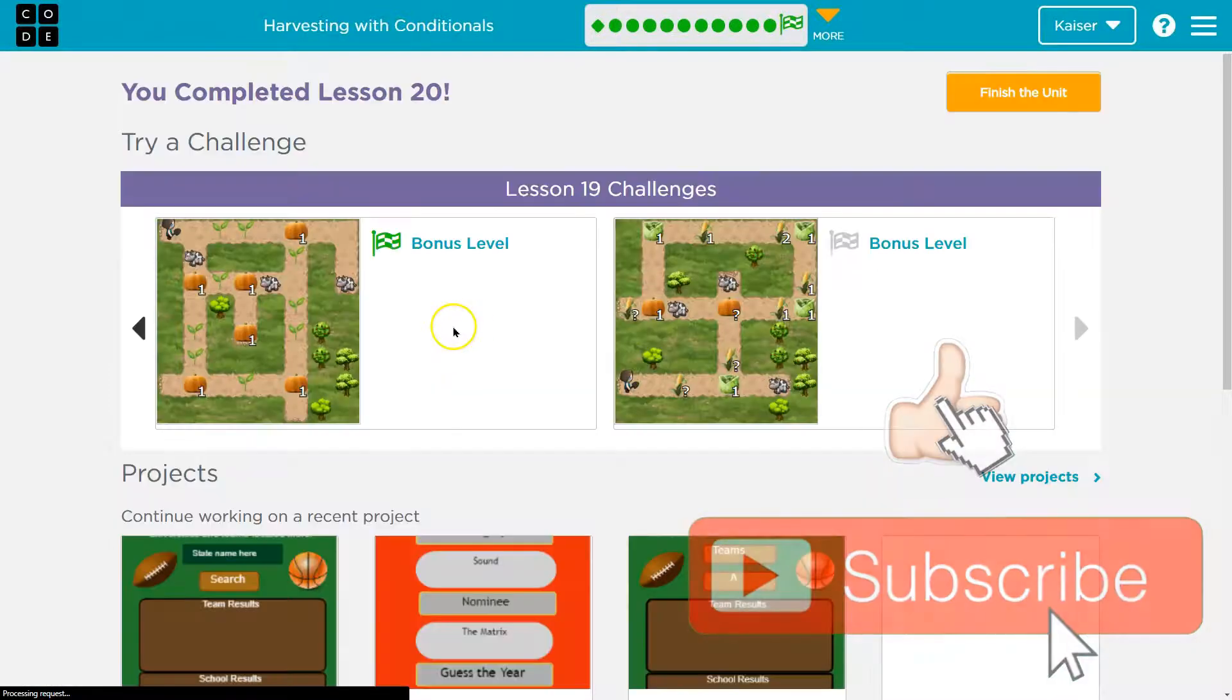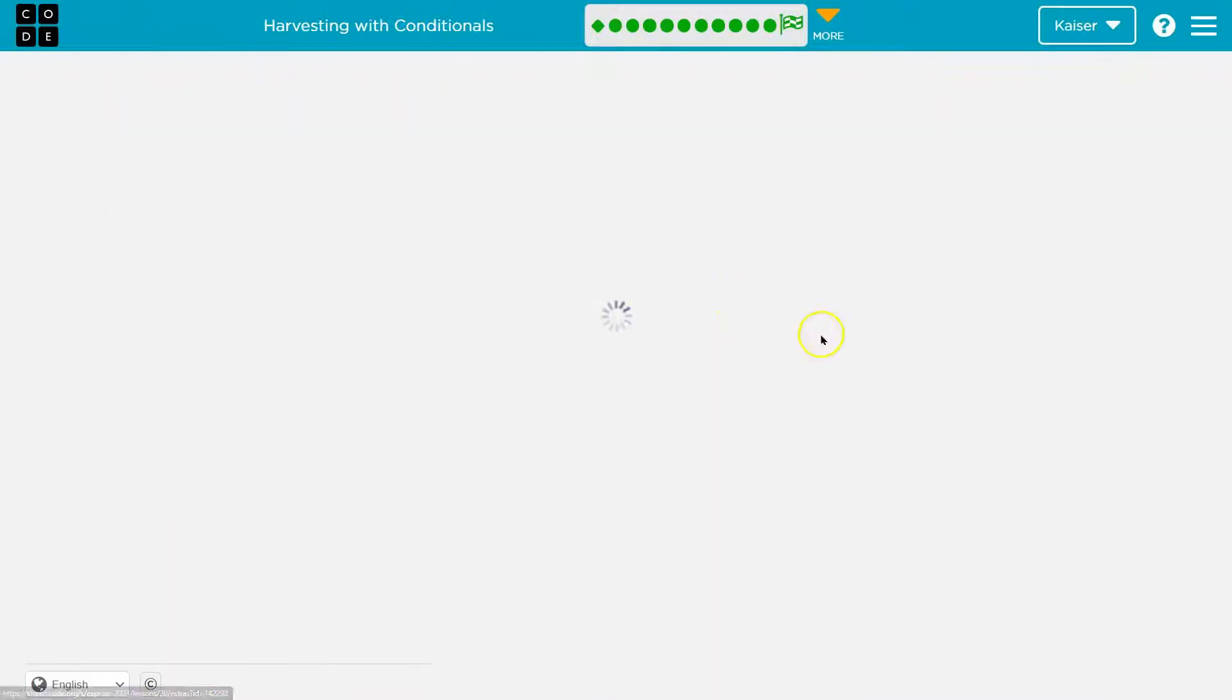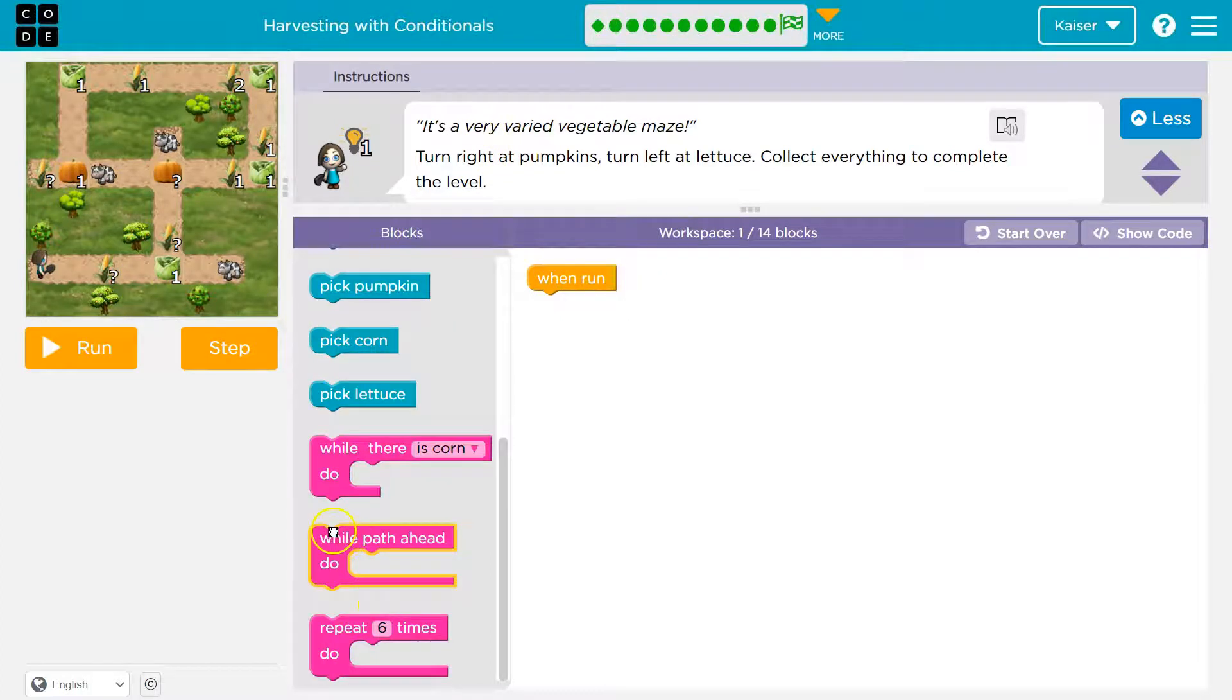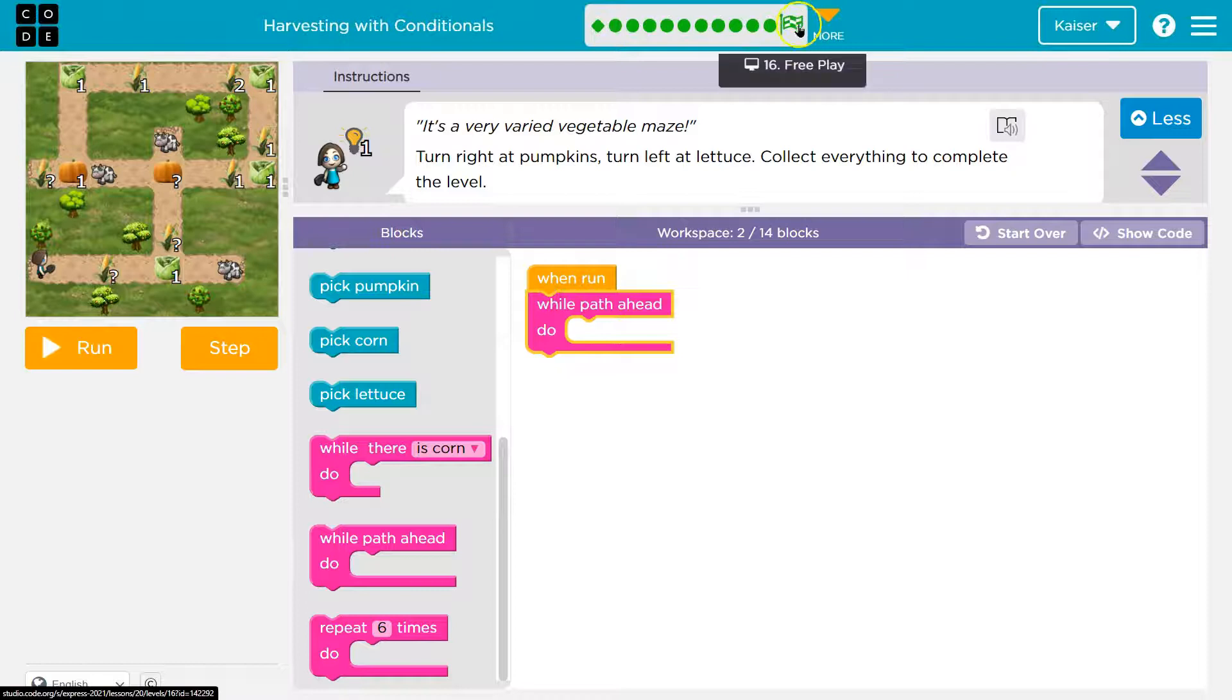Onward. All right. And let's do this bonus. All right. Oh my goodness. Look at this. So I think they want us to get all the veggies. I'm going to use a similar pattern. So turn right at the pumpkins. Cool. So we know how to do this. Hopefully you just checked out what we just did. Otherwise it's going to be super confusing.